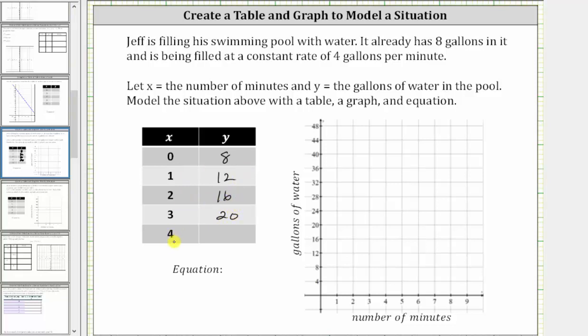When x is four, there will be 20 plus four, or 24 gallons of water in the pool. When x is four, y is 24.